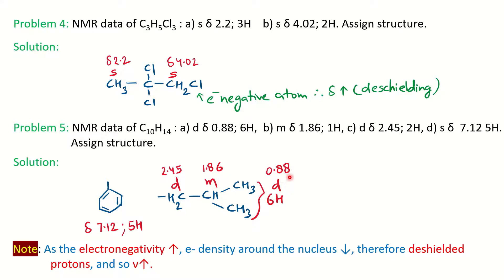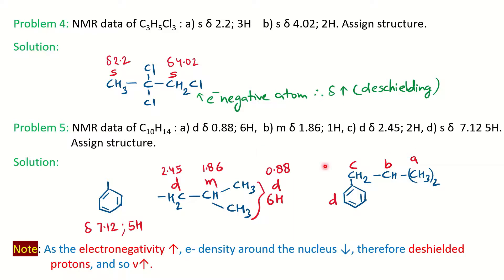The chemical shift values are: 6H at δ 1.86 (signal a), 1H multiplet at δ 2.45 (signal b), 2H doublet (signal c), and 5H aromatic at δ 7.12 (signal d). The δ 2.45 for the CH2 attached to the aromatic ring shows deshielding due to the anisotropic effect — those protons fall in the paramagnetic zone of the aromatic ring. The DBE formula can also be applied here to verify the unsaturation.